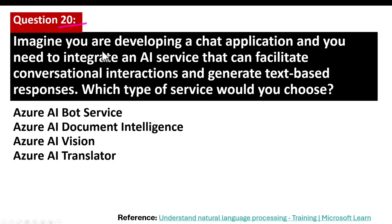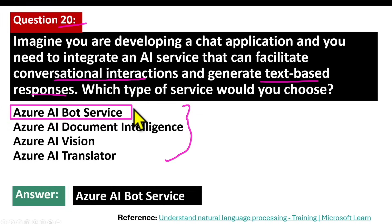Question number 20. Imagine you are developing a chat application and need to integrate an AI service that can facilitate conversational interactions and generate text-based responses. Which type of service would you choose? The correct answer is Azure AI Bot Service. Azure AI Bot Service is a cloud-based platform provided by Microsoft that enables developers to build, deploy, and manage intelligent bots capable of engaging in conversations, understanding natural language, and providing relevant responses.